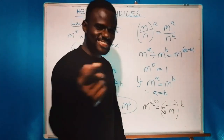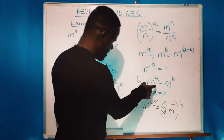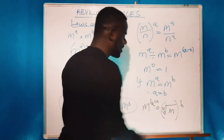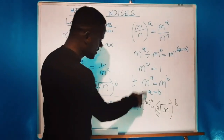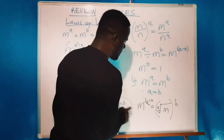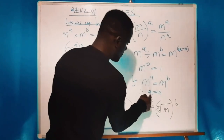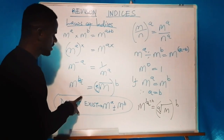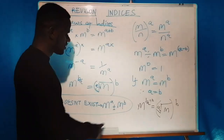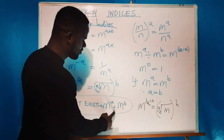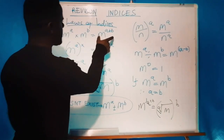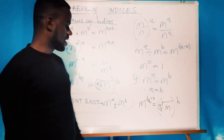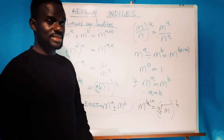The eighth law: if m raised to power a is equal to m raised to power b, then the powers are equivalent, meaning a equals b. An important point many students confuse: m to power a plus or minus m to power b cannot be simplified using a law of indices — there is no law that governs addition or subtraction of indices. That law does not exist.